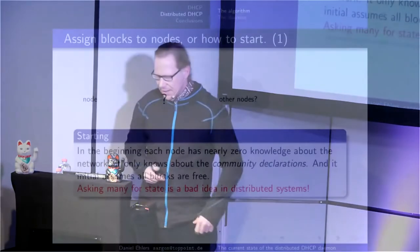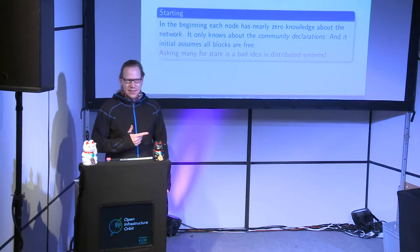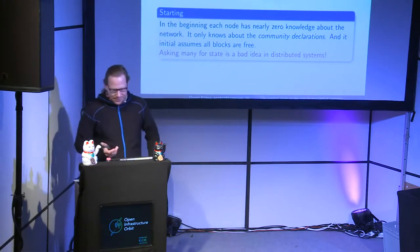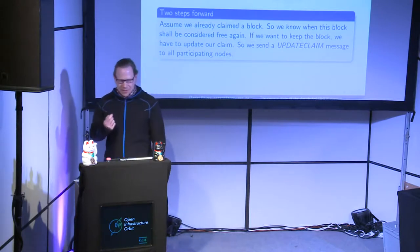In the beginning each node knows nearly nothing about the network — it just started up and knows the community declarations. The natural idea is to just ask everybody: notify everyone reachable via multicast and ask what the network looks like. But in distributed systems that's a bad idea, because if you ask everyone with one packet, everyone may answer with many packets, and you can DoS yourself. Starting is really hard, but let's assume we've already acquired some blocks.